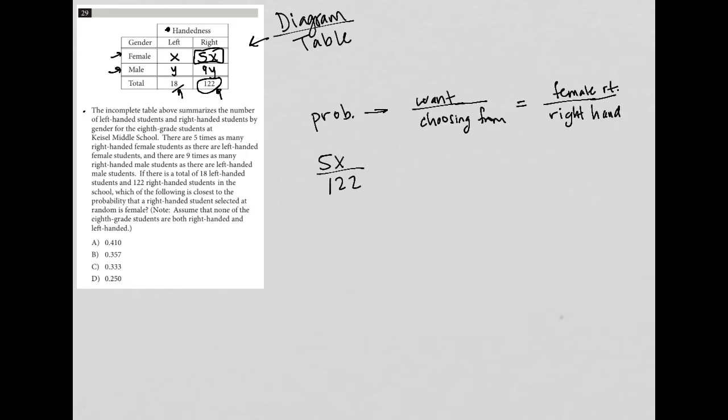So the other thing that I notice about this table is that the data here can be written in equation form. I can say that X plus Y is equal to 18. And I can also say that 5X plus 9Y is equal to 122.